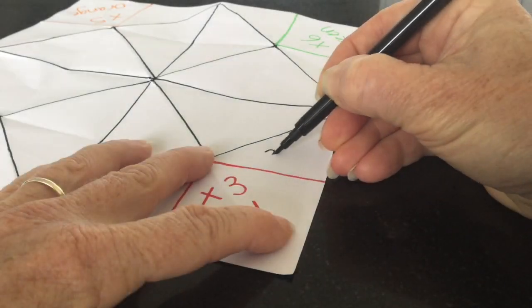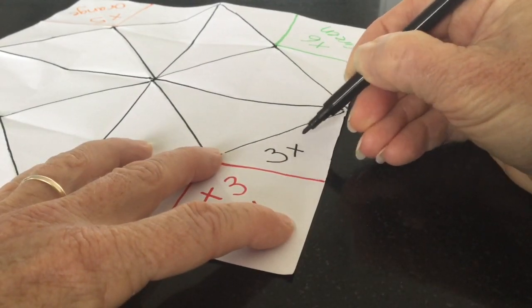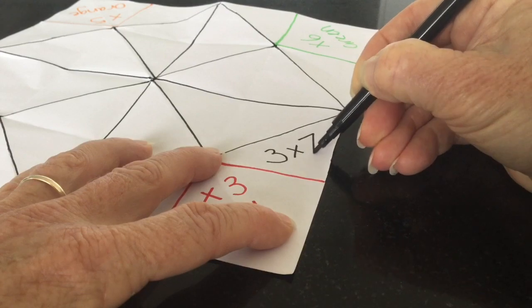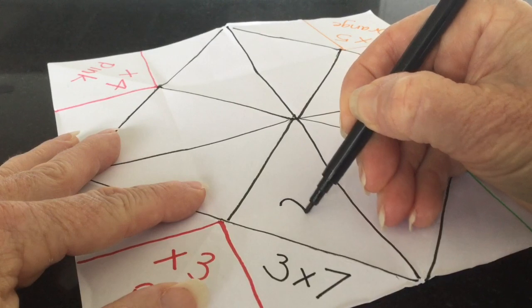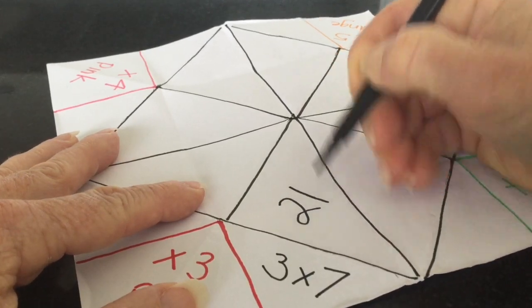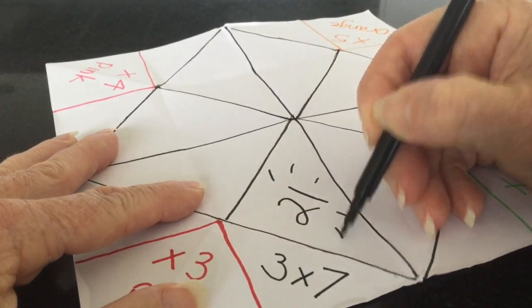And now we need to add our multiplication. So on our three times table, our first example is three times seven. And we put the answer in the triangle next to it. And then you can put some decoration around that, of course.